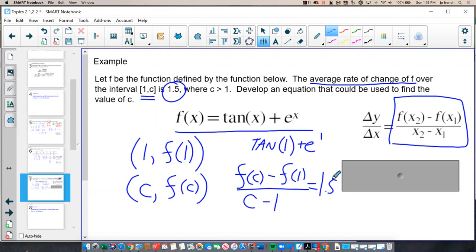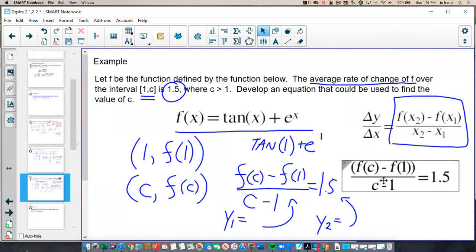Once I had this expression, I could plug y1 using this expression and replacing my c's with x's, and y2 I could set equal to 1.5, find their intersection, and solve for c. But I don't need to actually solve for c in this question. I just need to develop the equation. So f of c minus f of 1 over c minus 1 will give me 1.5.